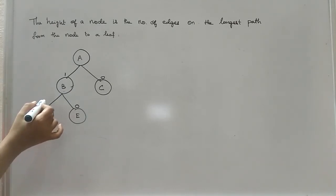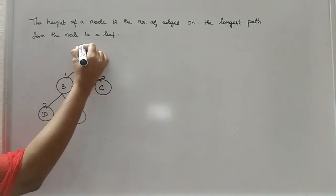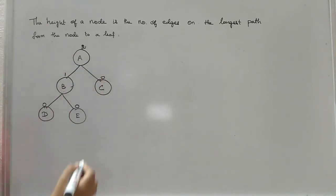You are having two edges, right? So you have to write the maximum only. So the height of node A is 2.